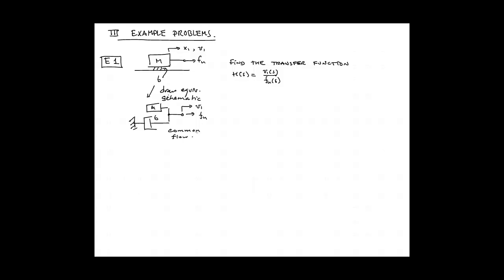So we can write force is equal to impedance times velocity but the impedance here is the sum of the two. Remember that when we have two elements connected in a common flow configuration their impedances add. So we write ZM plus ZB equals V1. We go ahead and express the transfer function as V1 over F sub U and now we can express that as one over the sum of the impedances.